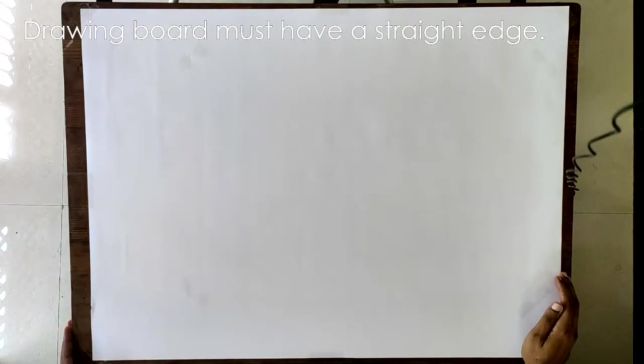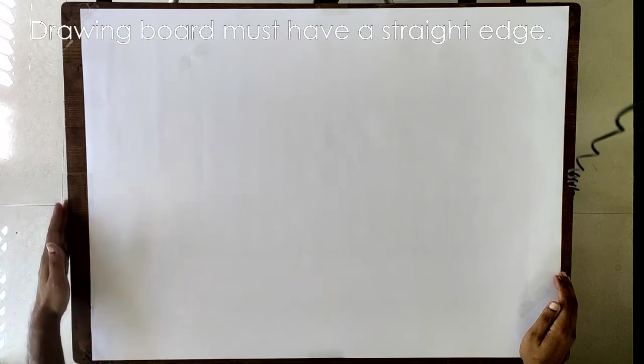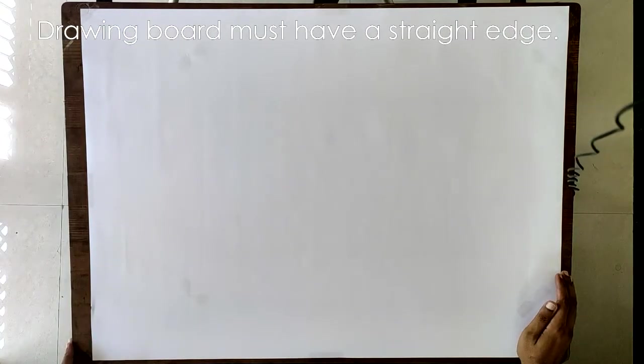The drawing board should have a straight edge. That means the edge should be exactly straight. I'll explain to you why it is required in a short while when we start drafting.